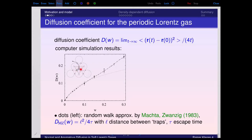For larger w, however, this approximation doesn't work well. There is a strong mismatch due to correlated jumps between traps — the particle may keep jumping in one direction from trap to trap, so the real diffusion coefficient is much larger than that predicted by the Machta-Zwanzig approximation. This illustrates an interplay between the exact dynamical results and the simple random walk approximation.